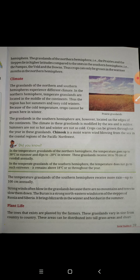The climate in these southern grasslands is modified by the sea and is milder — समुद्री हवाओं के कारण वहाँ का climate बनता है। Summers are not so hot and winters are not so cold. Crops can be grown throughout the year. Chinook is a moist, warm wind — नमी वाली हवा — जो Pacific coast की coastal regions से समुद्र से चलती है।